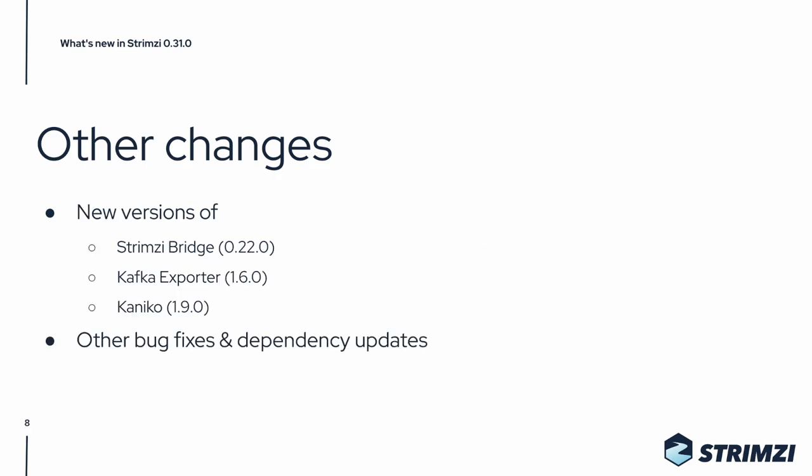There are also new versions of several components: 0.22 of the Strimzi bridge, 1.6.0 of the Kafka exporter, and 1.9.0 of the Kaneko container builder. And there are of course also many other bug fixes and dependency updates.